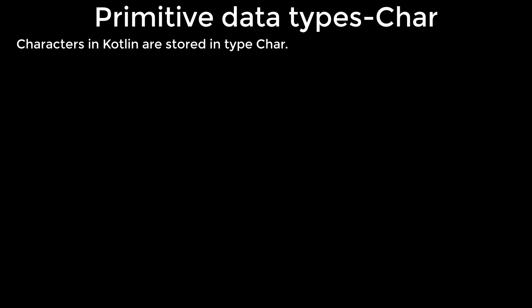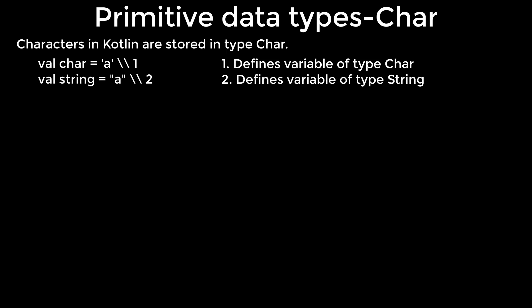Char: characters in Kotlin are stored in type char. In many ways characters are similar to strings, so we will concentrate on the similarities and differences. To define char we must use a single quote, kind of opposite to a string where we are using double quotes. One defines variable of type char, two defines variable of type string.